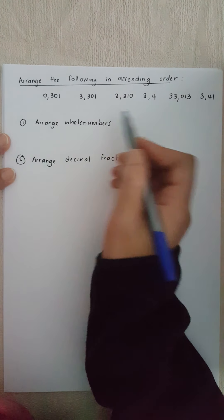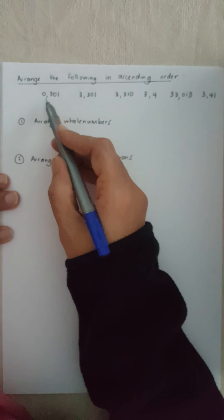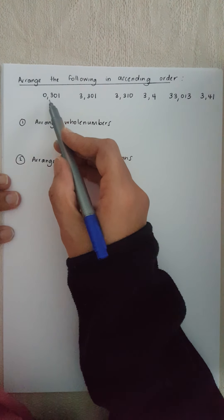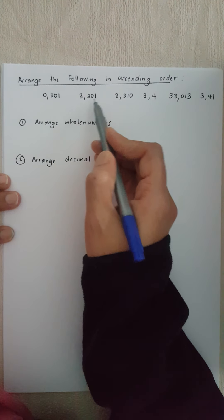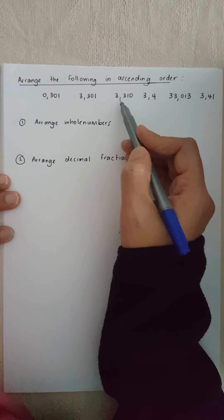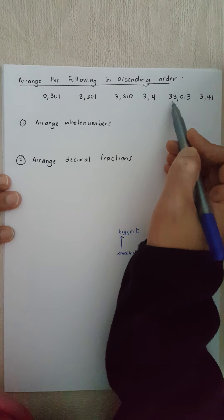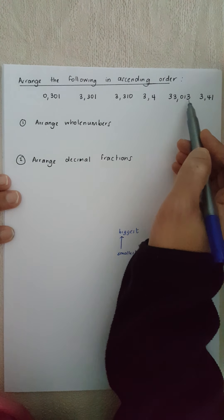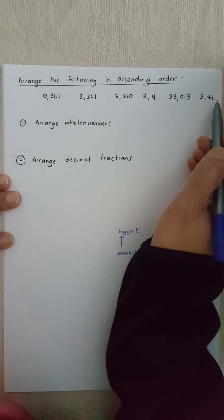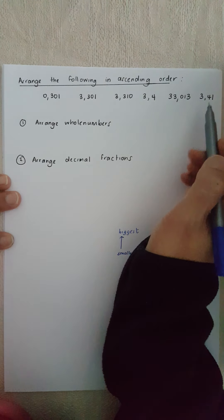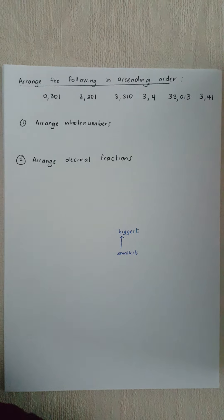We must find the smallest number to the biggest number. The first part — look at these numbers: 0,301 and 3,301 and 3,103 and 4,33 and 0,13 and 3,41. It looks confusing when you look at it like that, but let's see how simple it is.